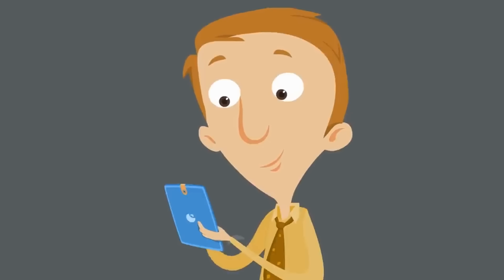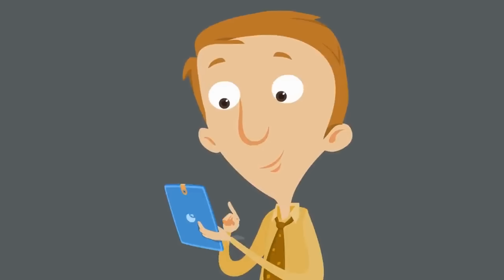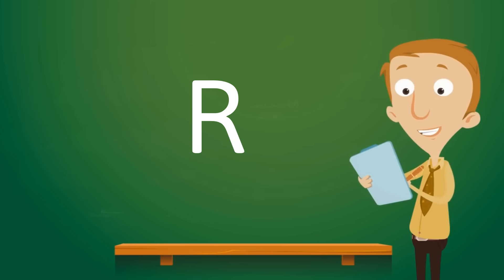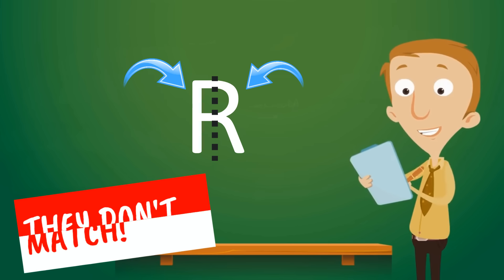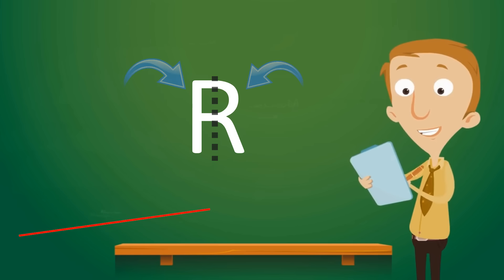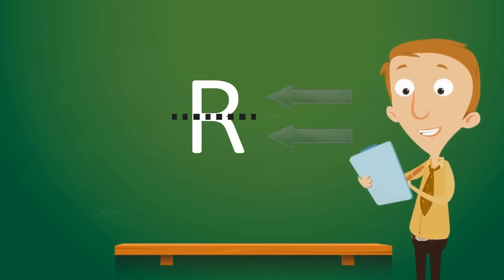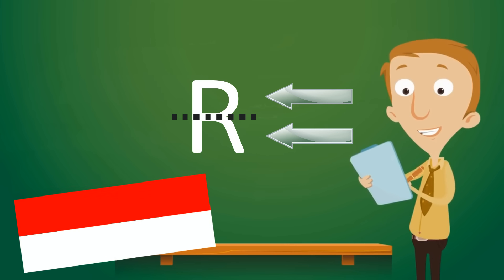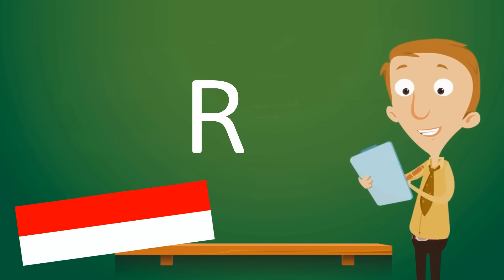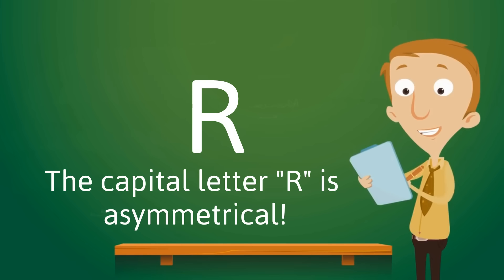There are other letters that are asymmetrical too. Look at the capital letter R. Let's try a vertical line of symmetry first. Do these sides match? They don't match. How about a horizontal line of symmetry? Do these sides match? They don't match either. The capital letter R is asymmetrical.